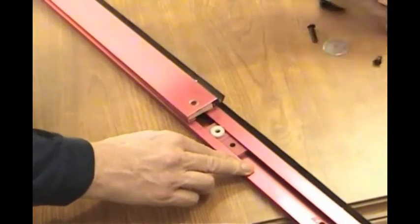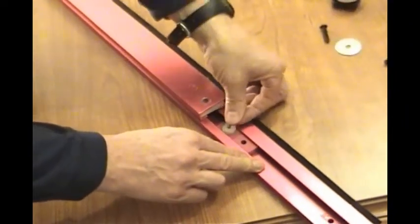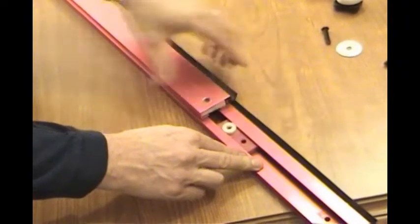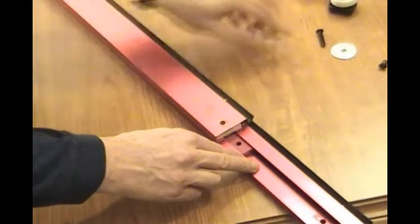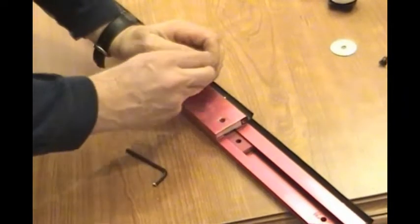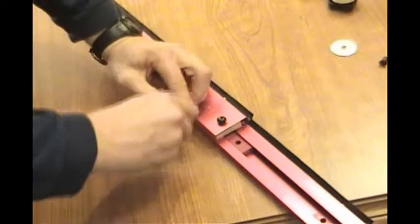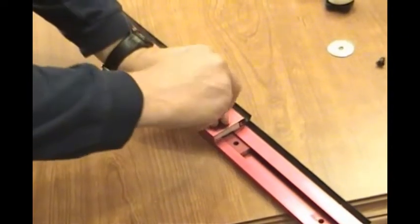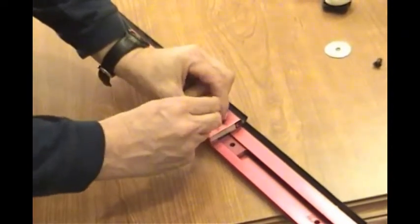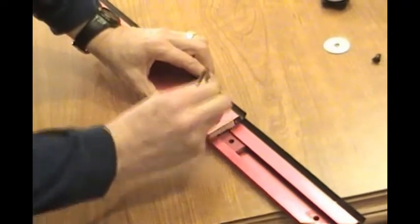You're going to want one thick spacer and one thin spacer and just put the fastener back into the expander block. But don't tighten it down all the way. Just kind of snug it up.